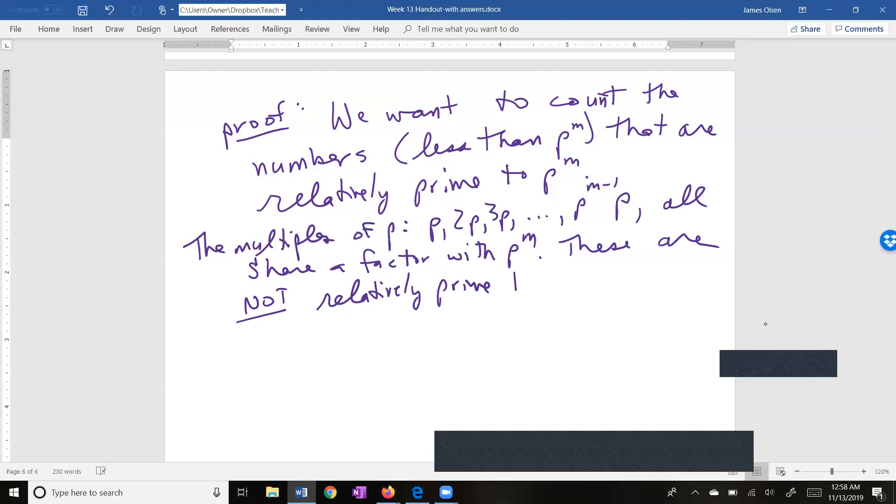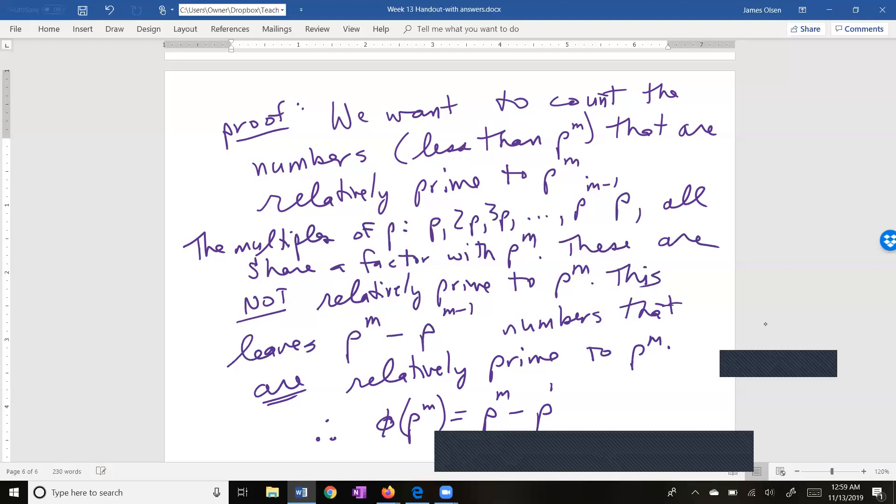These are not relatively prime to p to the m. The remainder, the remaining numbers are, this leaves p to the m minus p to the m minus one numbers that are relatively prime to p to the m. Therefore, phi of p to the m is equal to p to the m minus p to the m minus one. When you're writing the minus one, make sure you keep it up in the exponent. This proves our theorem.